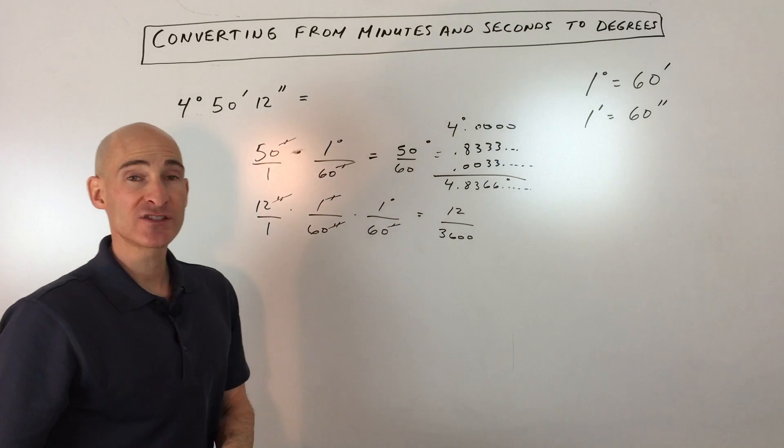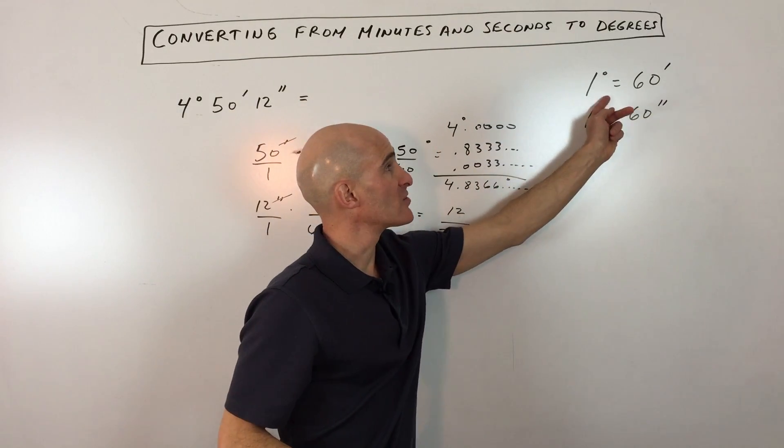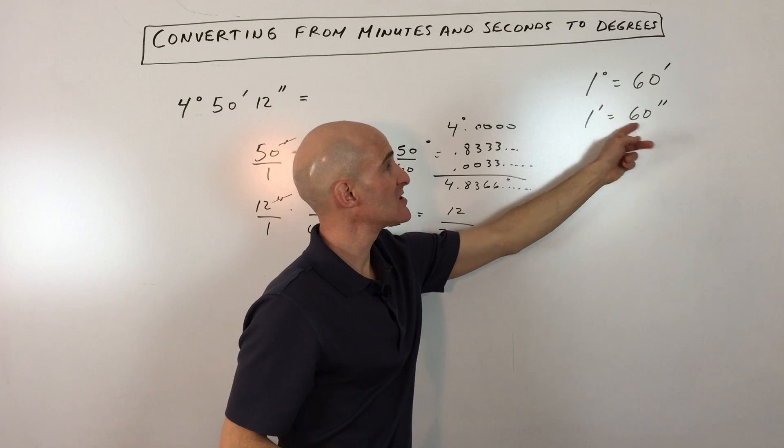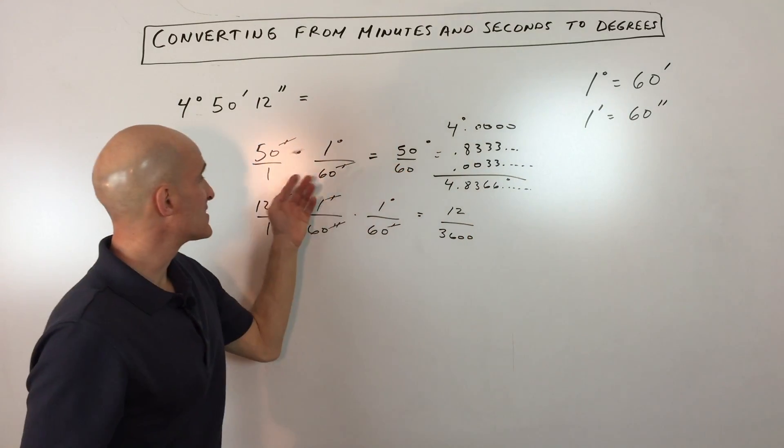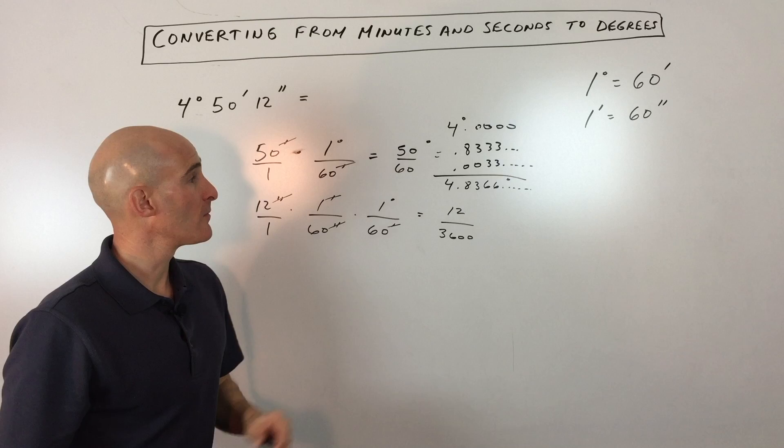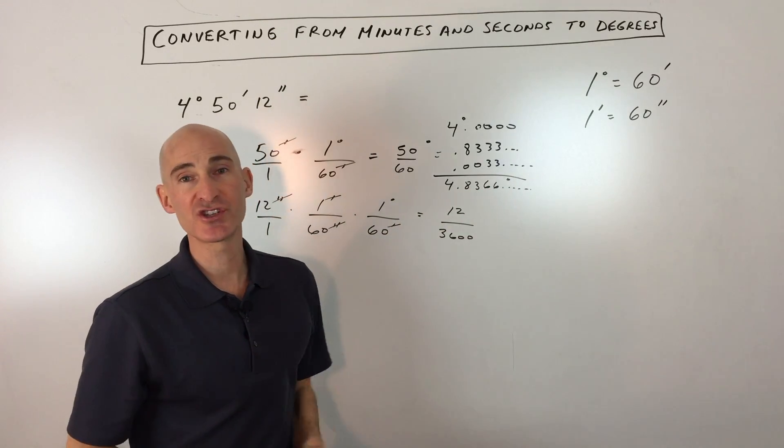So that's it. So that's all you have to do is think about these conversion factors. 60 minutes for every 1 degree, 60 seconds for every 1 minute. And then set it up so that the units you don't want cancel and you can convert everything into just degrees.